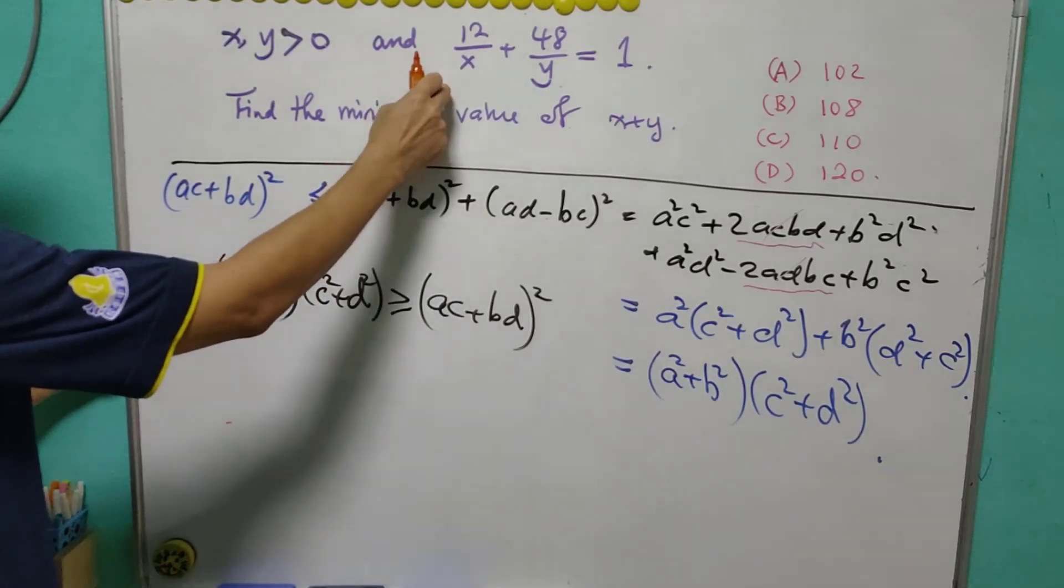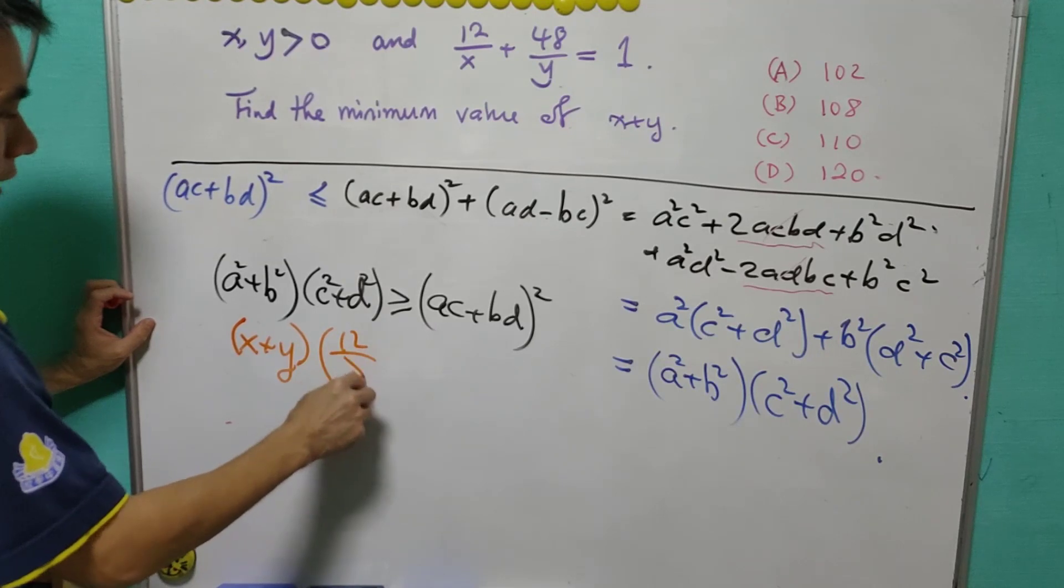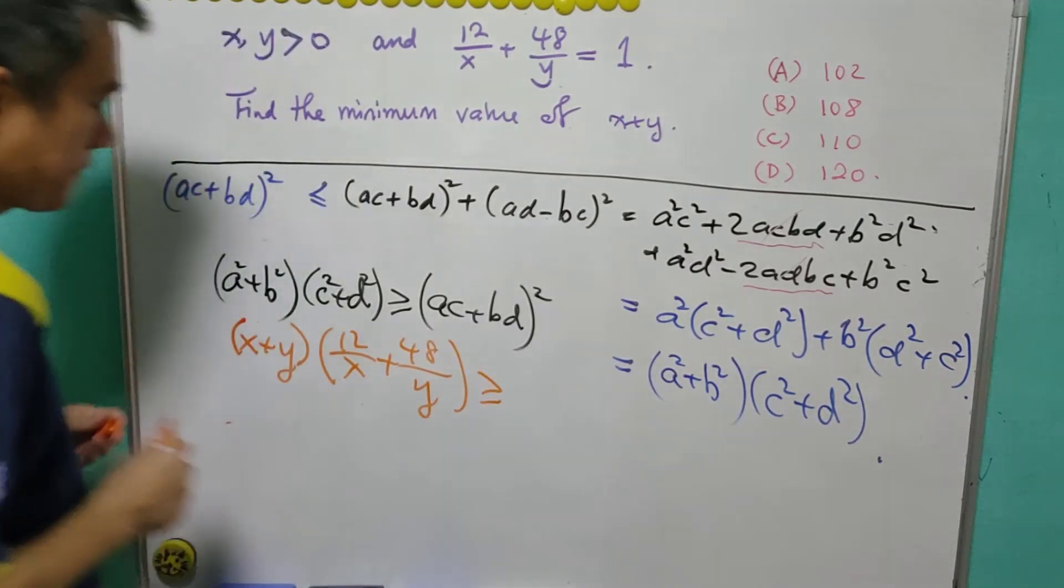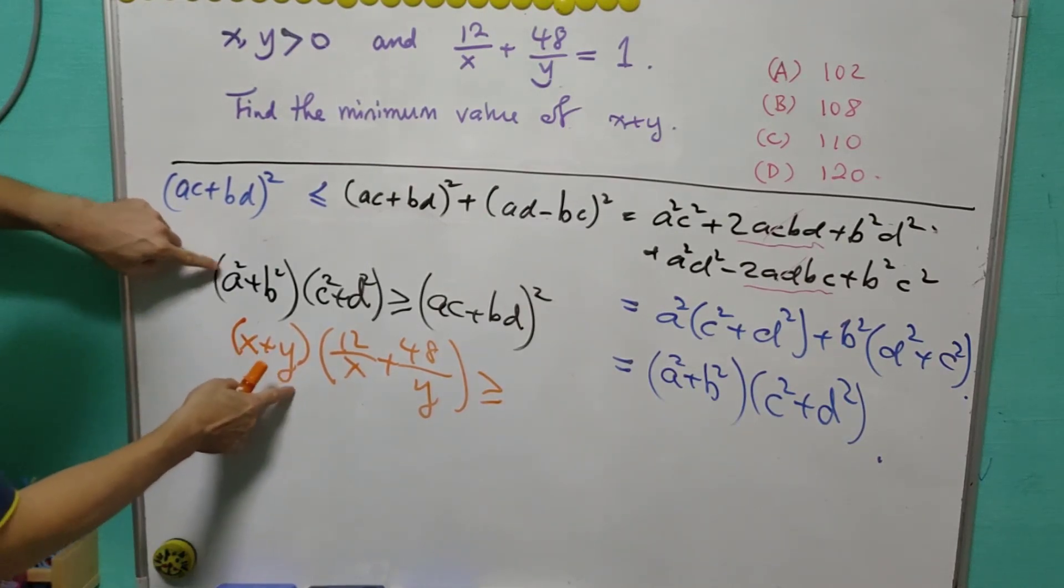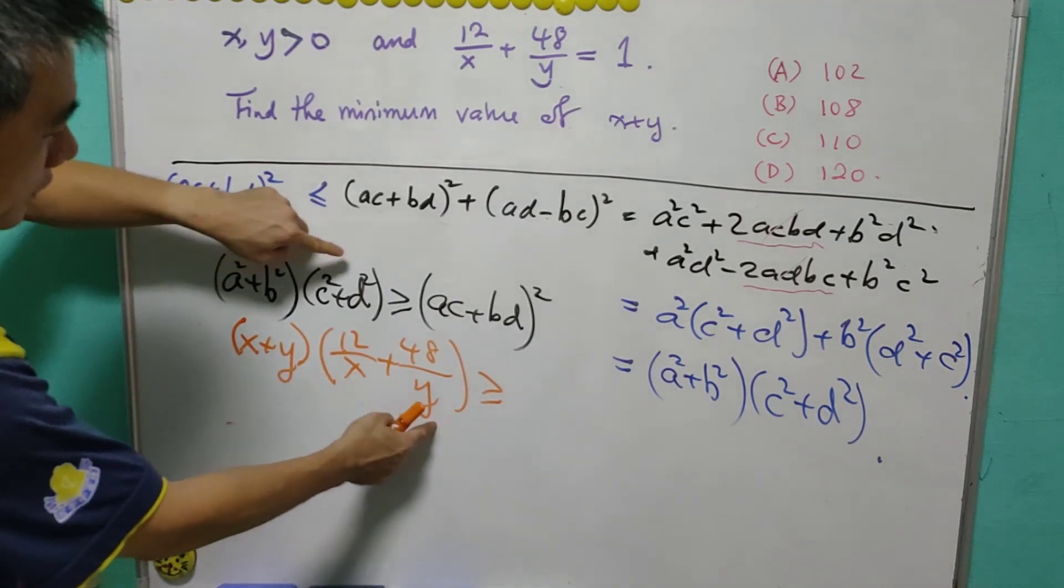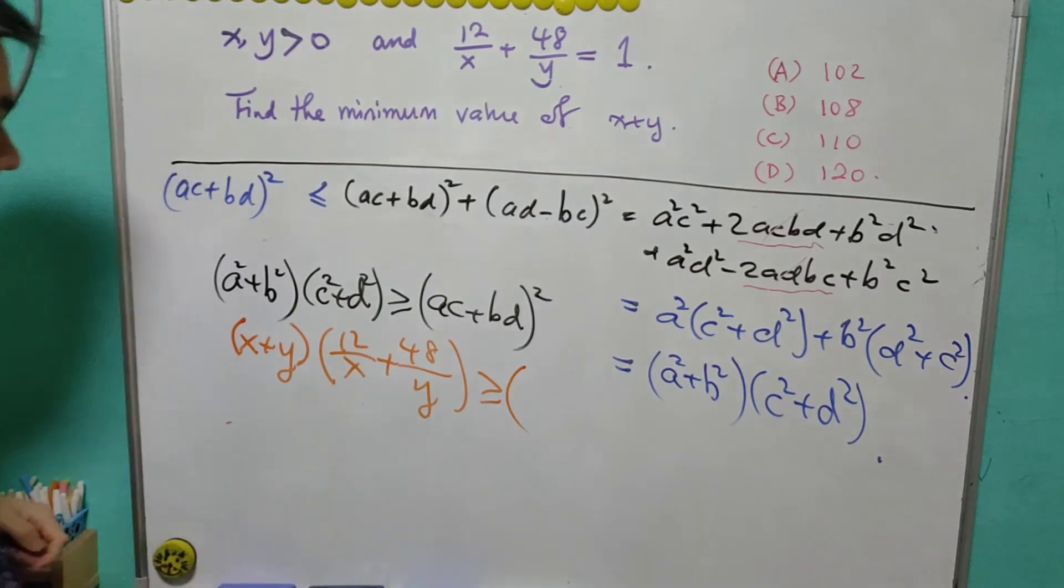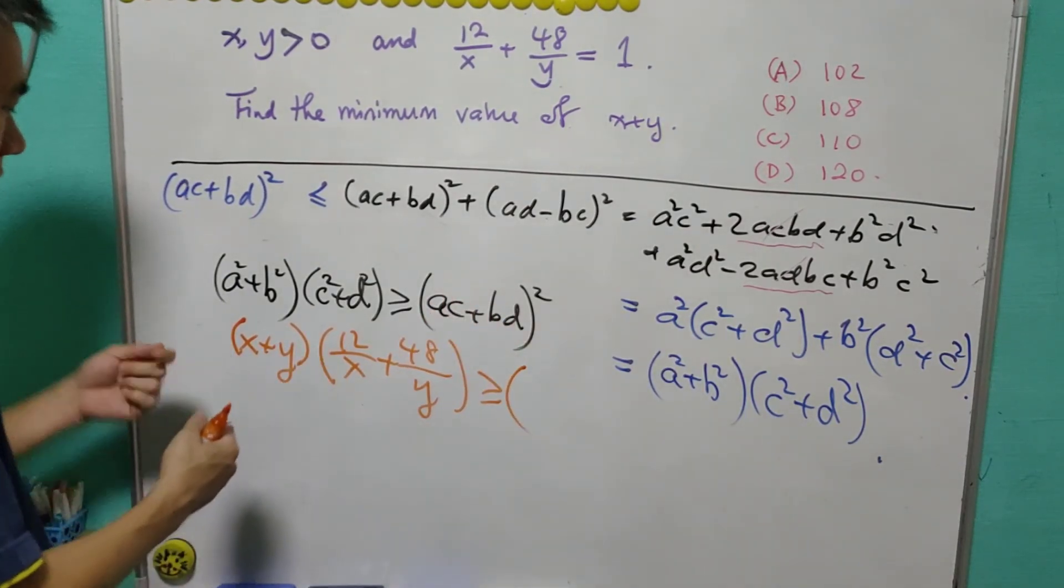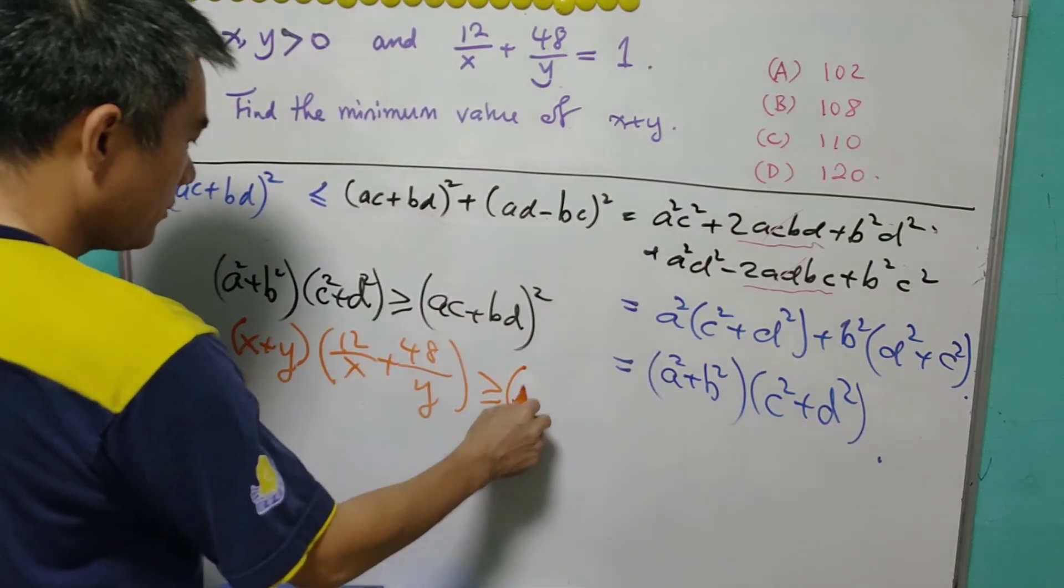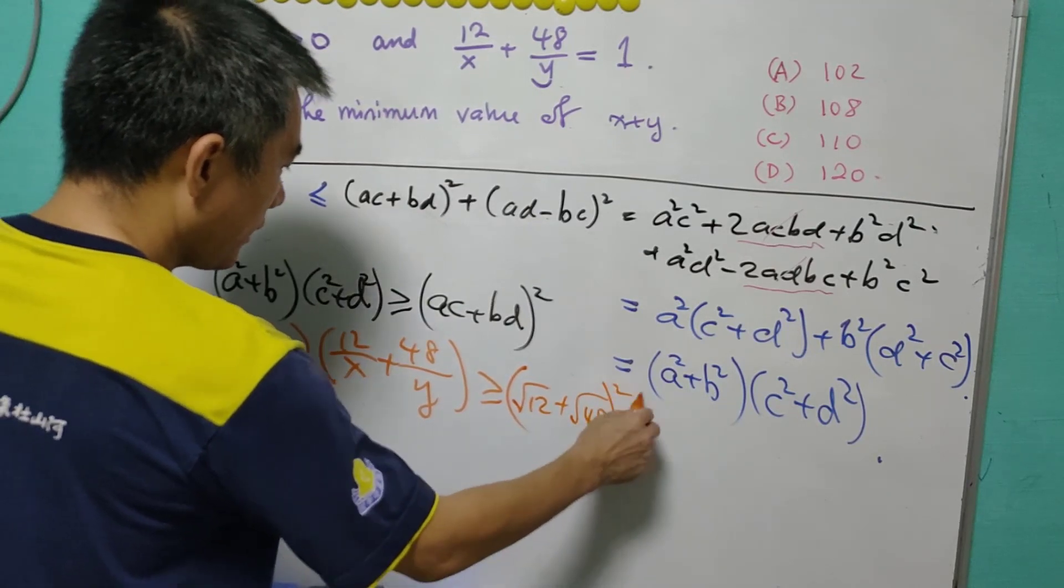Now then, go back to this. If we consider (x + y) times (12/x + 48/y), according to this result it can be written as (ac + bd)². ac will be equal to this, so it will be √12, and bd will be equal to √48. And take the square.